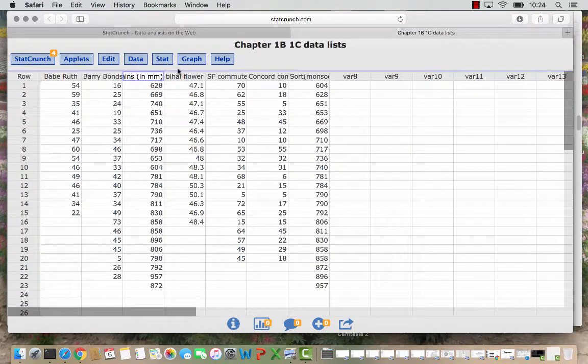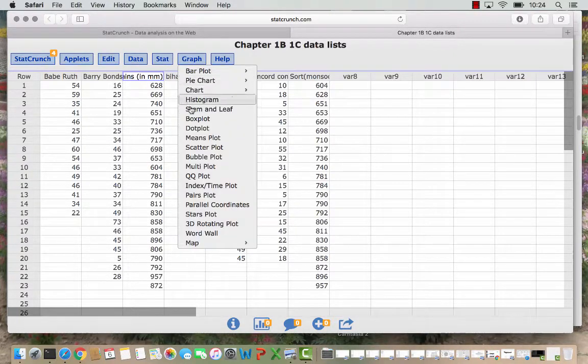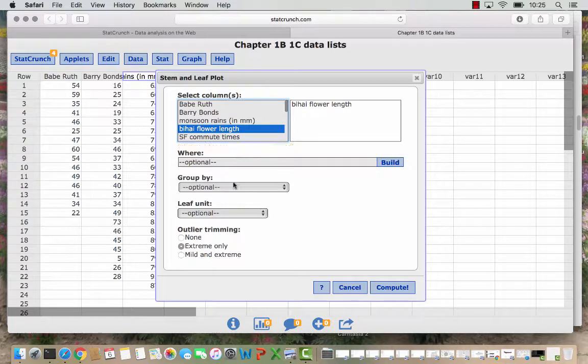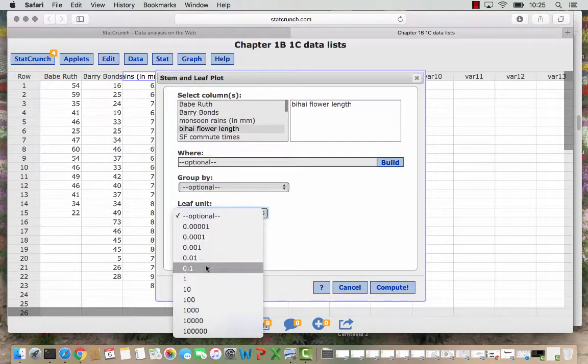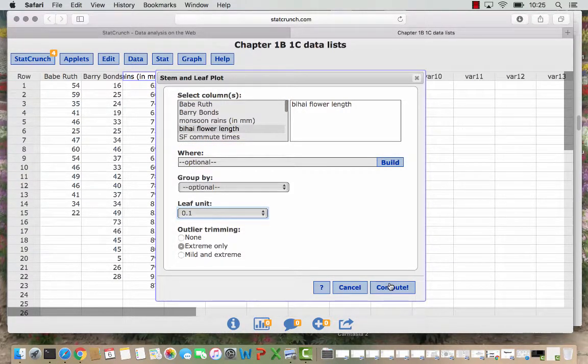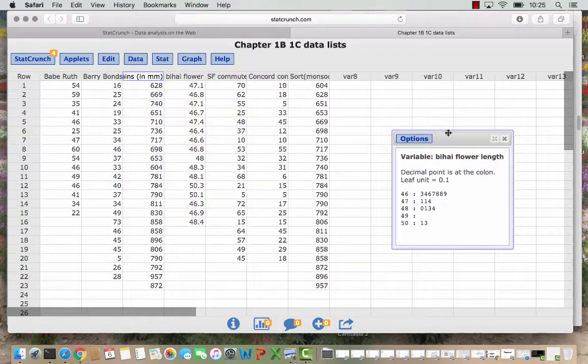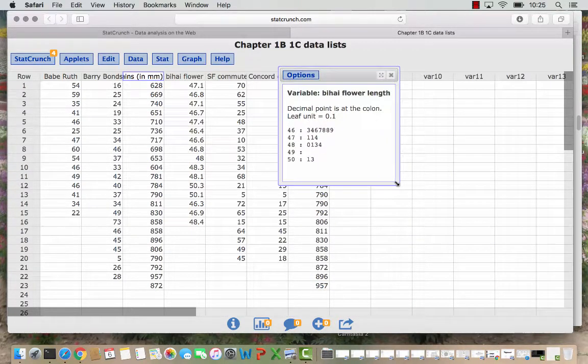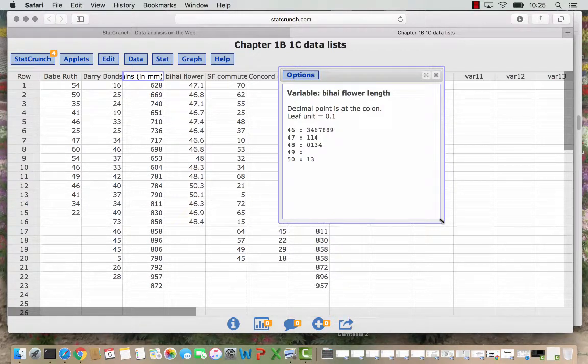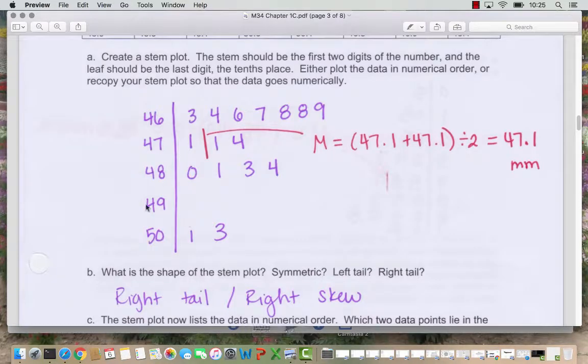So we've got our beehive flower lengths in this column. So you can go to graph, stem and leaf plot, select beehive flower lengths. And then we want the leaf unit to be the tenth. So pick 0.1 for leaf unit and compute. And you can see this is exactly a match for what we've got drawn out. Since there's no values in 49 you still want to leave the 49 in there as a stem because you want to show any gaps or breaks in the data. Make sure you're not jumping from 48 to 50.